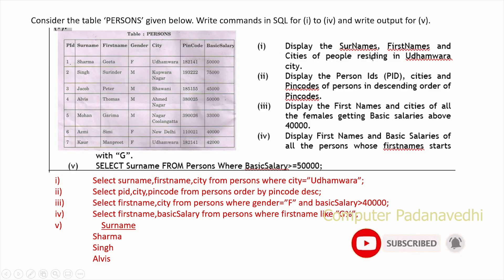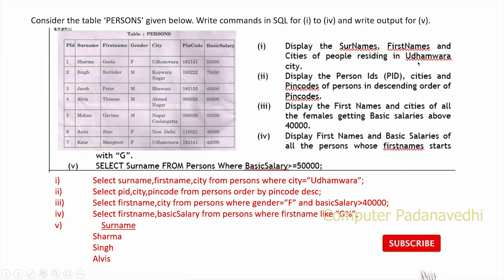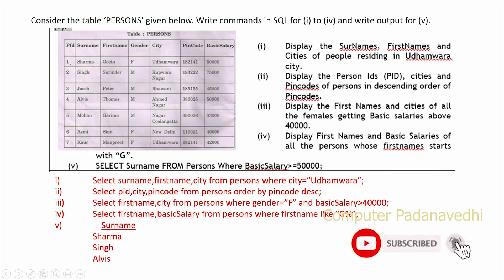Display the surname, first name, and city of people residing in Uthambara city: SELECT surname, first_name, city FROM persons WHERE city = 'Uthambara'.